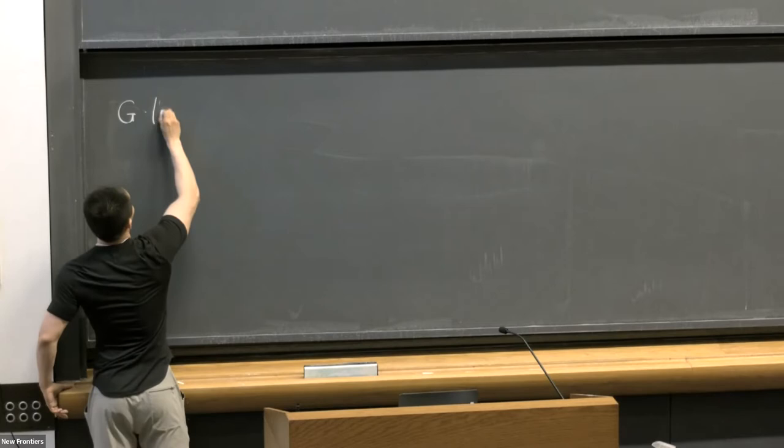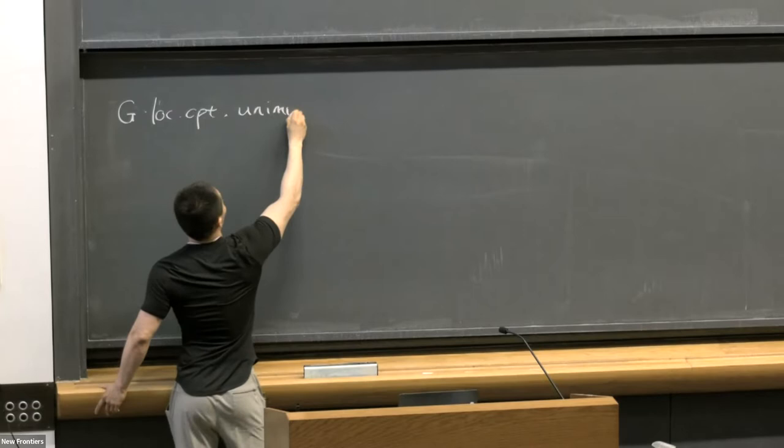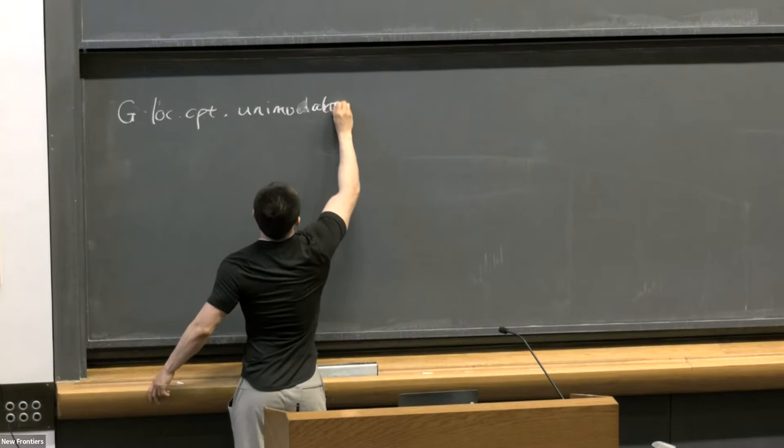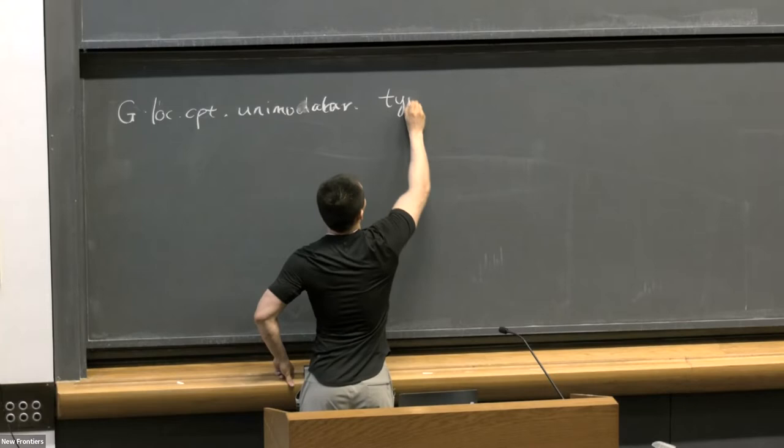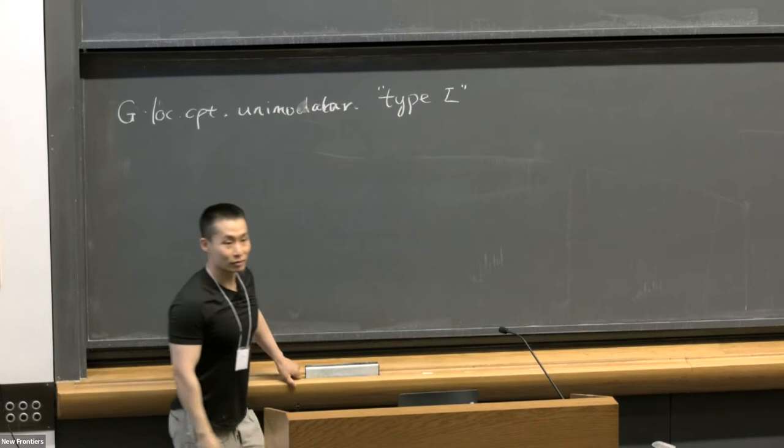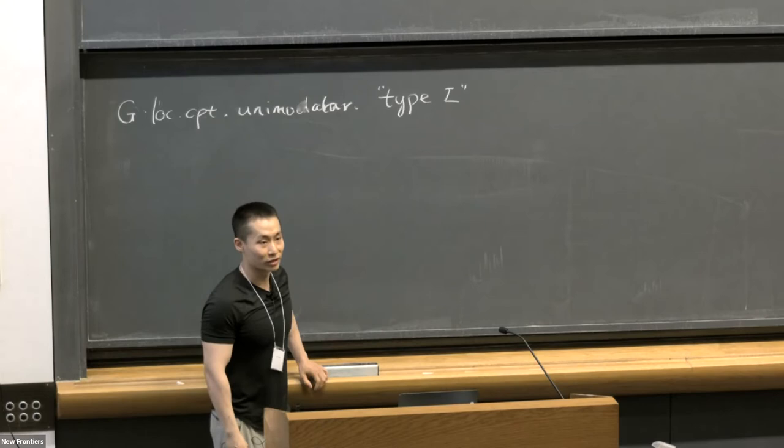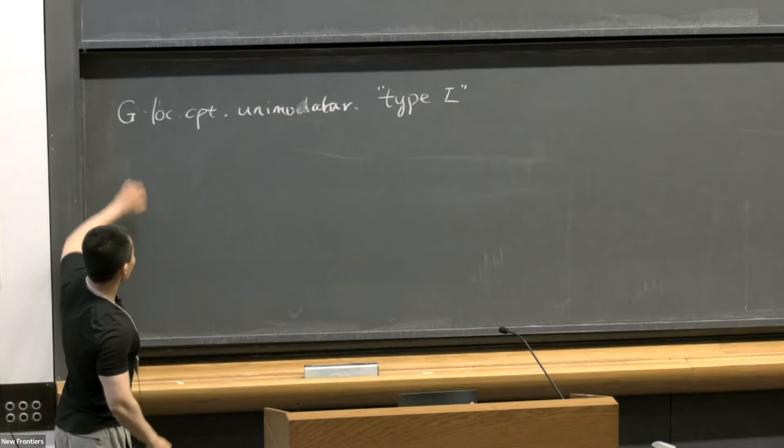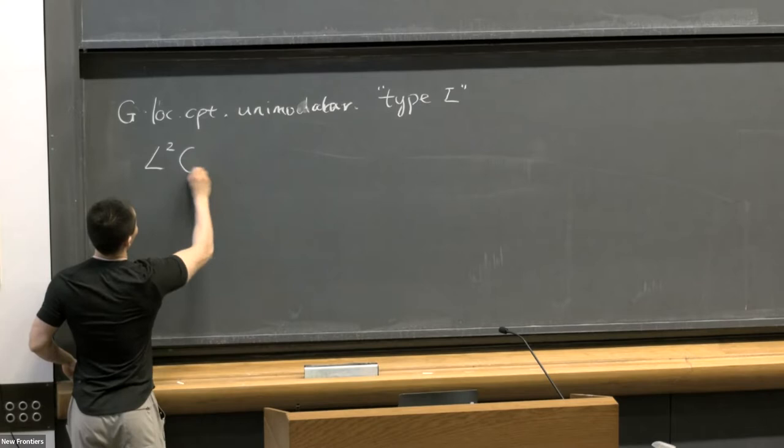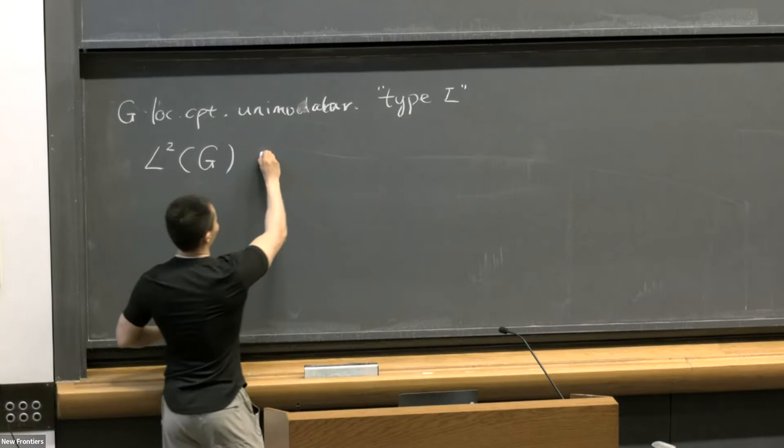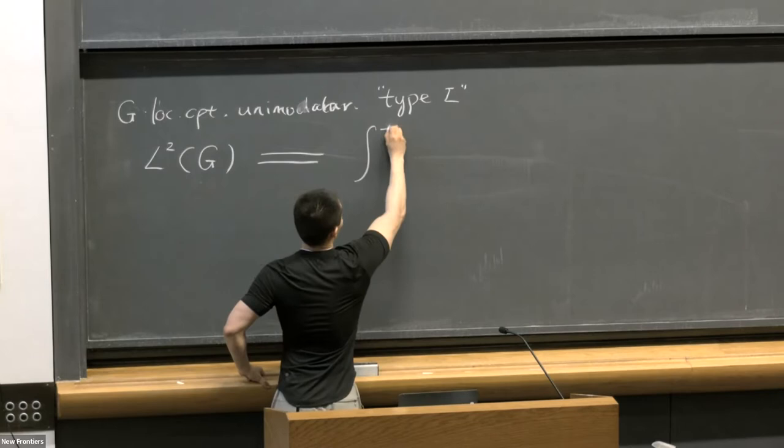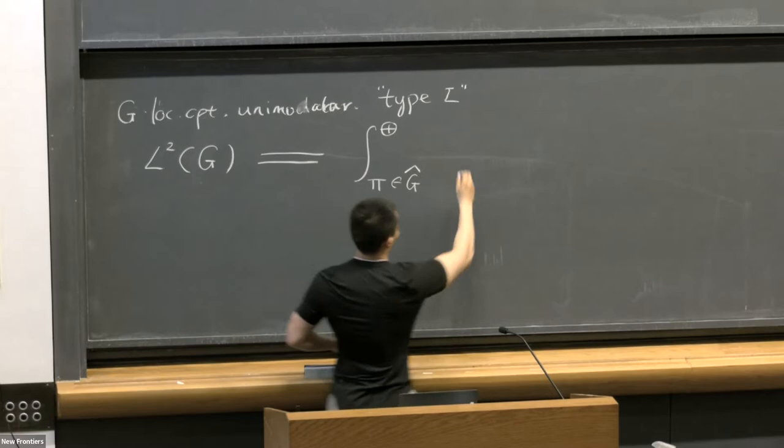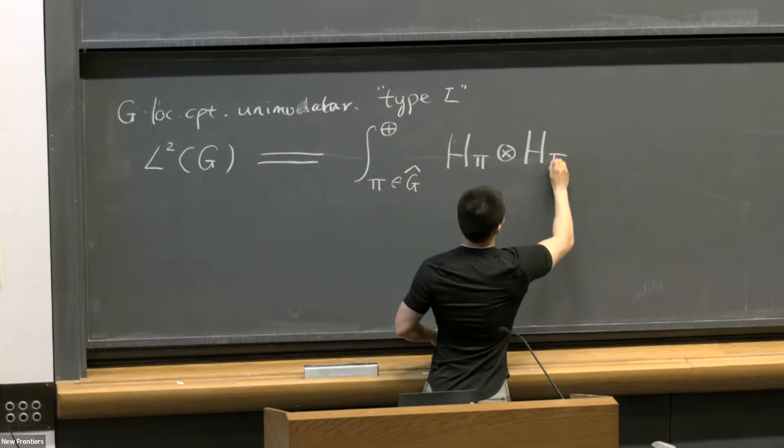Now we assume G is locally compact and unimodular, so we can fix a Haar measure. Moreover, I assume it's of type one. I will not give you the precise definition of type one group here, but all reductive groups and all compact groups are type one. If G is not compact or not abelian and finite, we can consider the L2 space of G with respect to a fixed Haar measure.